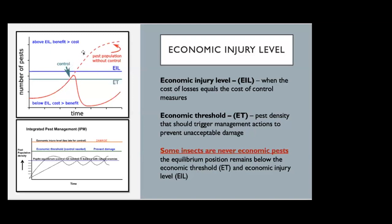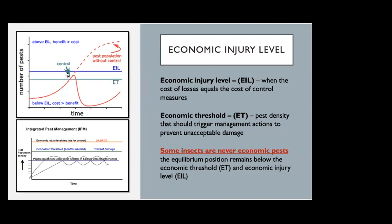If the pest population goes above that line, you can see in the dotted red line that the benefit of applying a control measure outweighs the cost. But below the blue line, it's more expensive to apply a control measure than the benefit you'll get. Just because an insect is present does not mean it's causing an economic problem. As the insect population rises, it crosses the economic threshold — the pest density that should trigger management action — because control measures don't respond instantaneously; they take time to work.